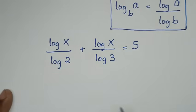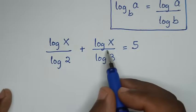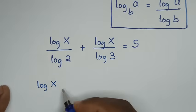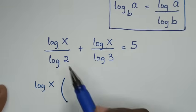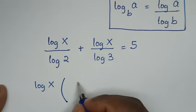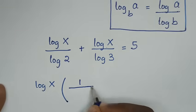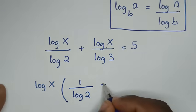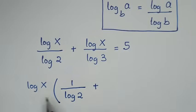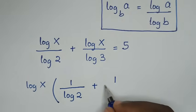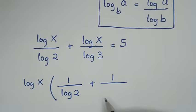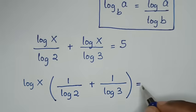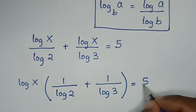In the next step, log of x is common, so we will take log of x out of the bracket. Now log of x divided by log of x is 1, so it will be log of x times the bracket: 1 over log of 2 plus 1 over log of 3, equals 5.